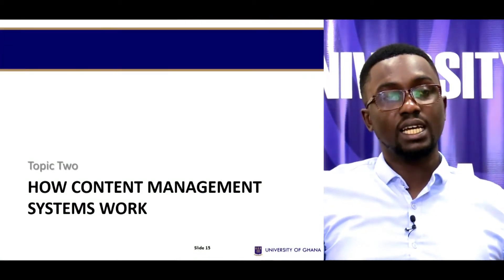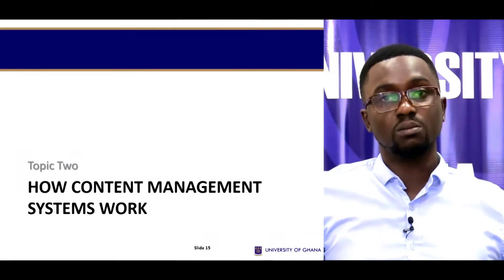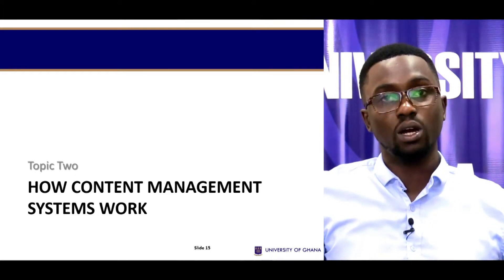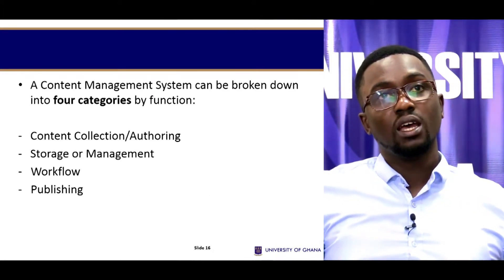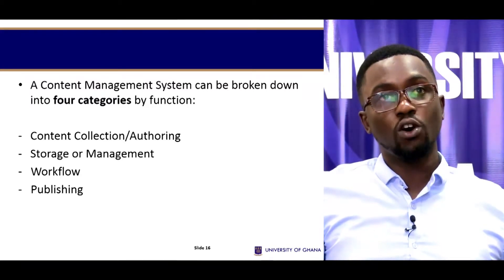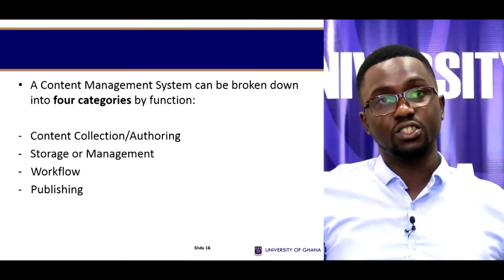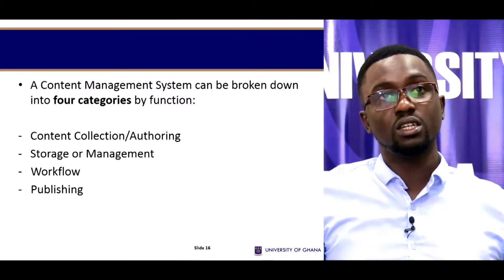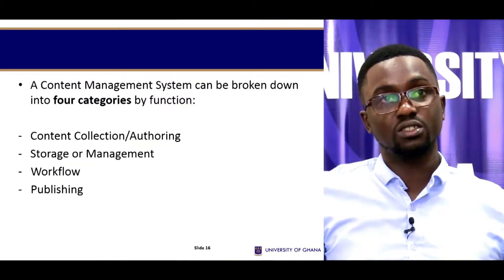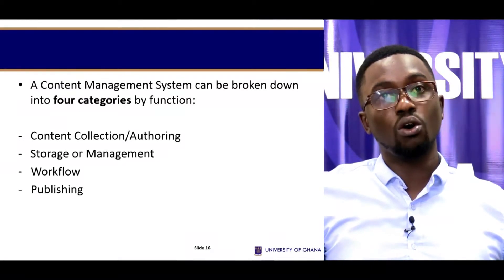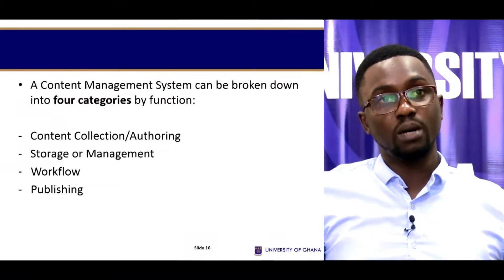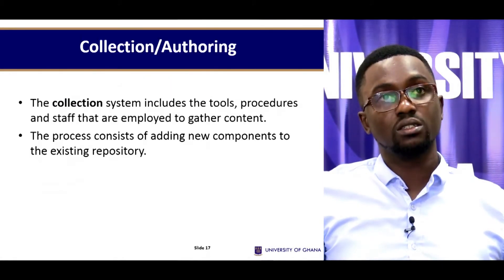We move on to how content management systems work. A content management system can be broken down into four main categories by function: content collection or authoring, storage or management, workflows, and publishing. We'll take each one in turn.